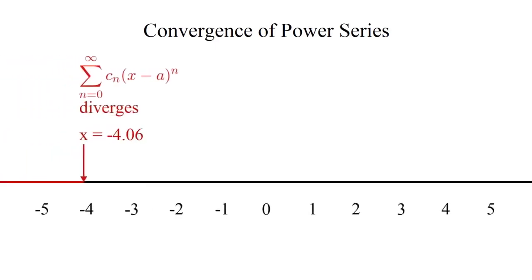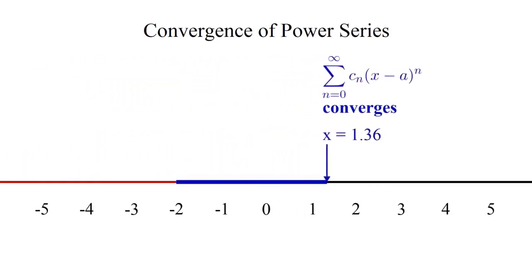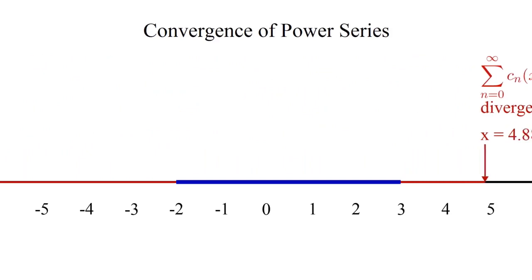It turns out that for any power series, the set of x values for which it converges is always an interval centered at the power series center point A. This interval is called the interval of convergence of the power series.